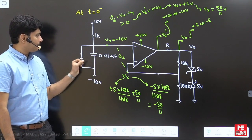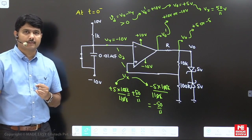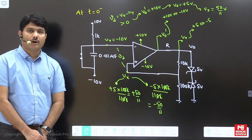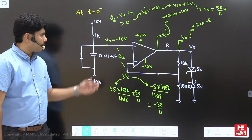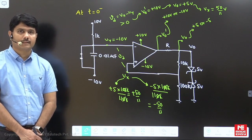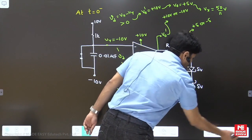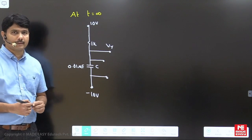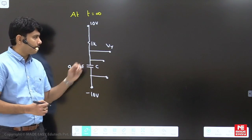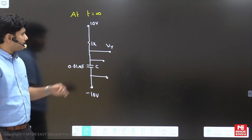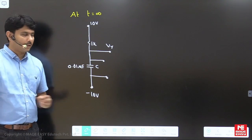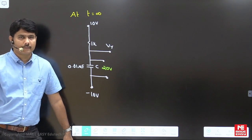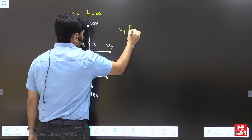When the switch opens at t > 0, the capacitor starts charging, so V_y will change. I estimate V_y at t → ∞: with the capacitor acting as an open circuit, the circuit sees +10V and −10V, so the capacitor tries to charge to 20V. Therefore V_y at the final state = V_C − 10 = 20 − 10 = 10V.